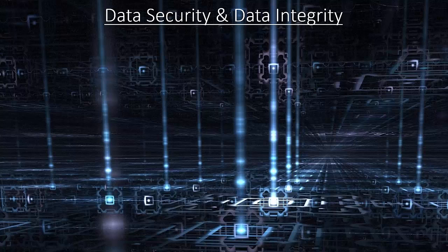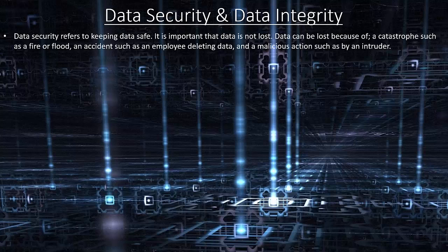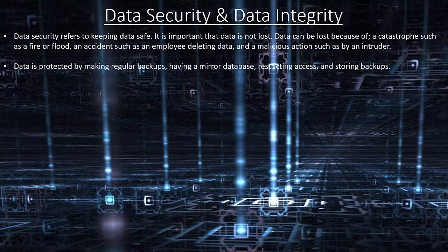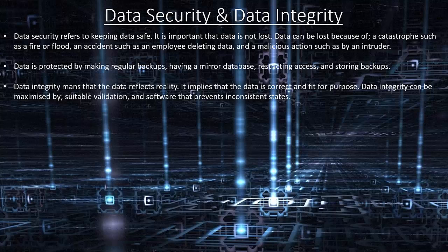Data security and data integrity. Data security refers to keeping data safe. It is important that data is not lost. Data can be lost because of a catastrophe such as a fire or flood, an accident such as an employee deleting data, or a malicious action such as an intruder. Data is protected by making regular backups, having a mirror database, restricting access and storing backups offsite. Data integrity means that the data reflects reality and implies that the data is correct and fit for purpose. Data integrity can be maximised by suitable validation and software that prevents inconsistent states.